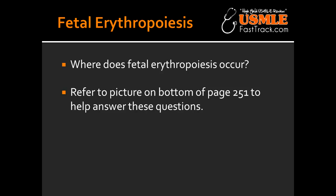Where does erythropoiesis occur in a fetus that's 15 to 30 weeks old? In a fetus that's 15 to 30 weeks old, erythropoiesis occurs in the spleen. Where does erythropoiesis occur in a 22-week-old fetus as well as in adults? Erythropoiesis for a 22-week fetus as well as in adults happens in the bone marrow.